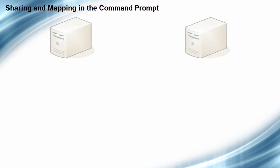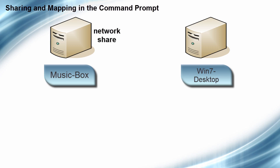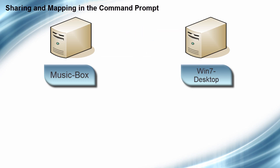Of course, sharing and mapping can be done in the GUI of the operating system, but it can also be done in the command line. Let's take, for example, two computers: Computer 1, which is named MusicBox, and Computer 2, which is named Win7 Desktop. The first will be sharing the data, and the second will be accessing that data over the network. MusicBox will have a command prompt with a black background with green text, whereas the Win7 Desktop will have a white background with blue text.